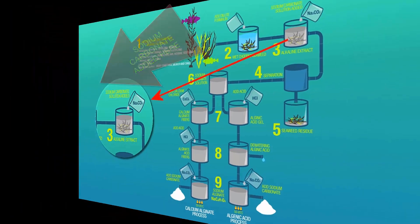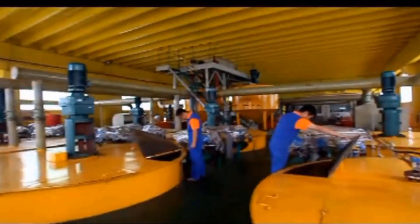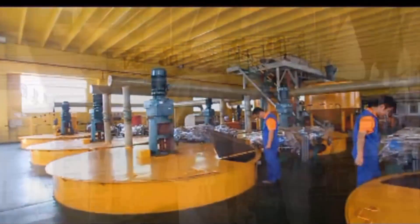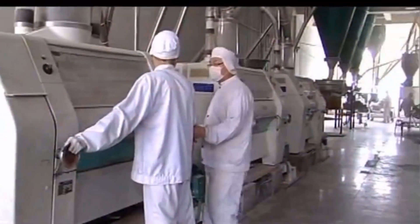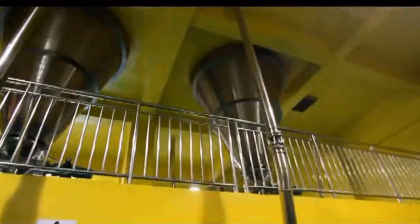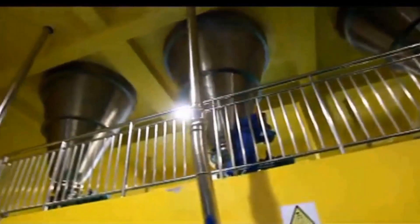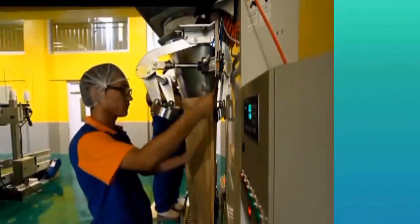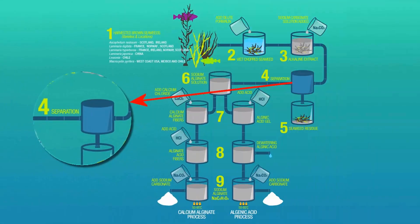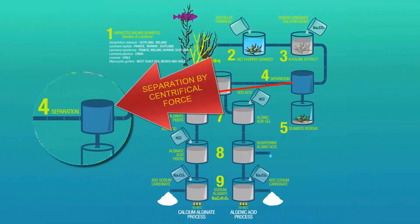It takes a large capital investment in extraction machinery to refine the alginate into a usable raw material. The extraction process uses centrifugal force to separate out the liquid from the solid matter.